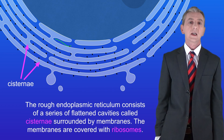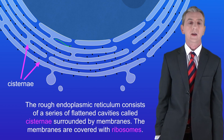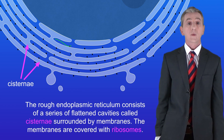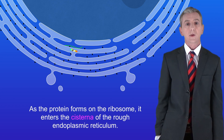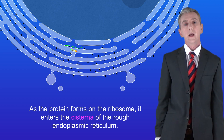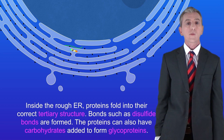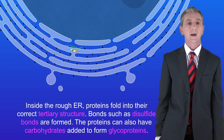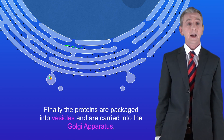The rough endoplasmic reticulum consists of a series of flattened cavities called cisternae, surrounded by membranes. The membranes are covered with ribosomes. As the protein forms on the ribosome, it enters the cisterna of the rough endoplasmic reticulum. Inside the rough ER, proteins fold into their correct tertiary structure. Bonds such as disulfide bonds are formed, and the proteins can also have carbohydrates added to form glycoproteins. Finally, the proteins are packaged into vesicles and carried into the Golgi apparatus.